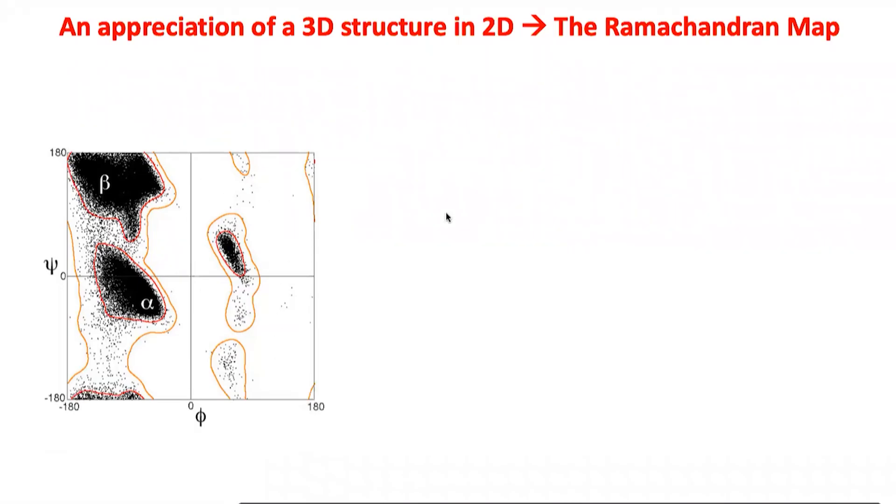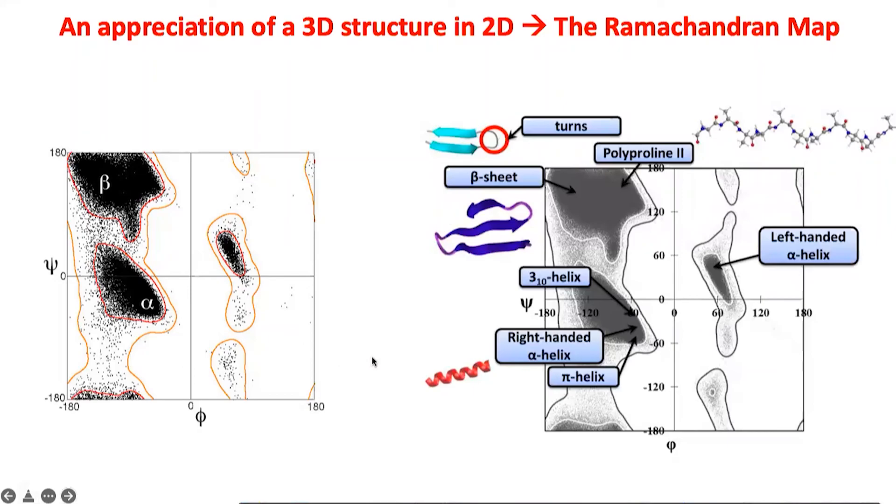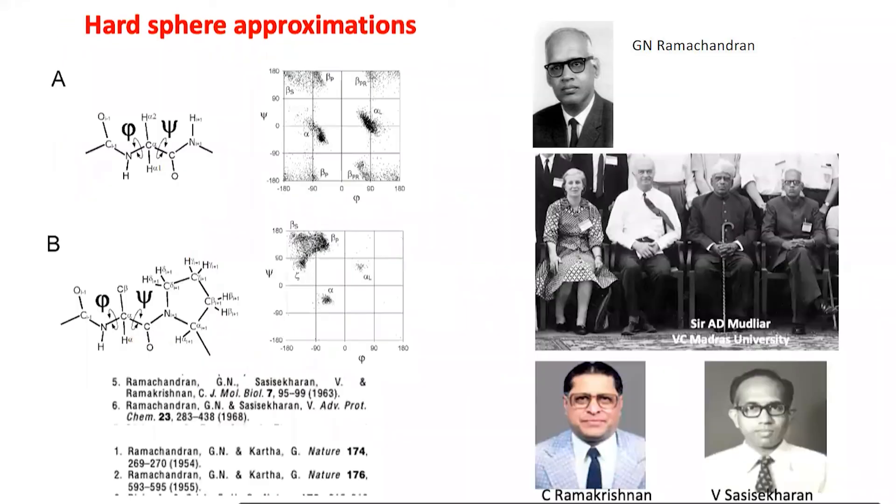And that is why a huge amount of this torsion space is completely empty. So this is the representation we have now. We know that the left-handed helix basically comes over here, beta sheets have phi-psi angles over here, right-handed alpha helix is pretty much over here. So are pi helices, three-turn helices—these are all different kinds of helices.